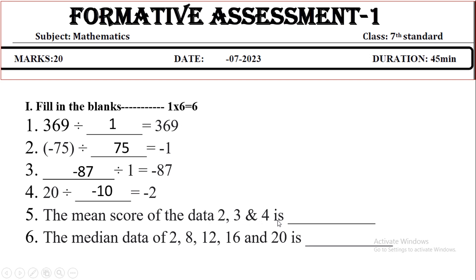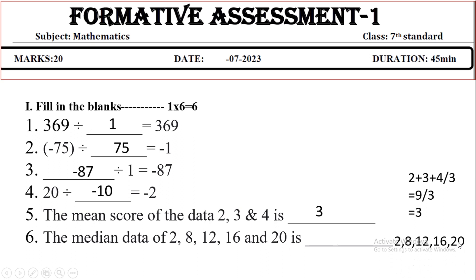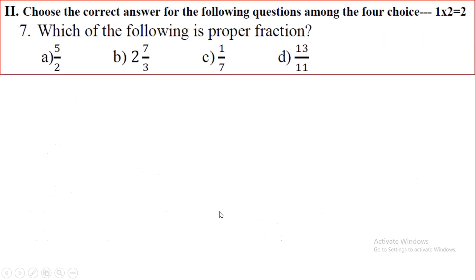For the mean score of the data 2, 3, 4: add them to get 9 and divide by 3, giving a mean of 3. For the median of the data 2, 8, 12, 16, 20 — the numbers are already in ascending order, and the middle number is the median. So 12 is the median of this data.